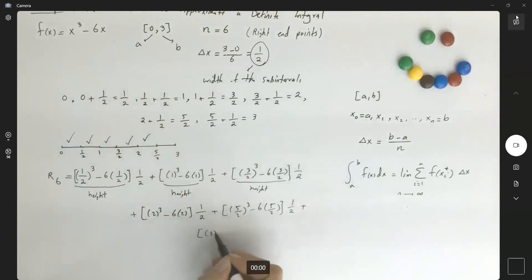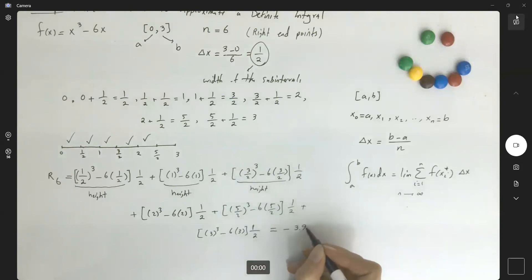So now here you have 3 to the third minus 6 times 3, times the width. And if we just add these together, it's going to be, let's write down all the decimals, negative 3.9375.